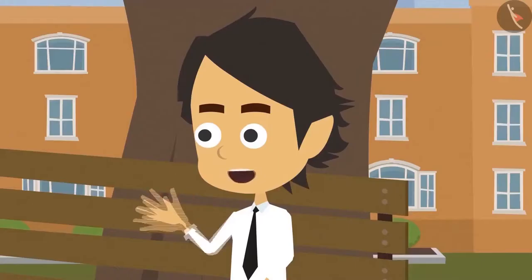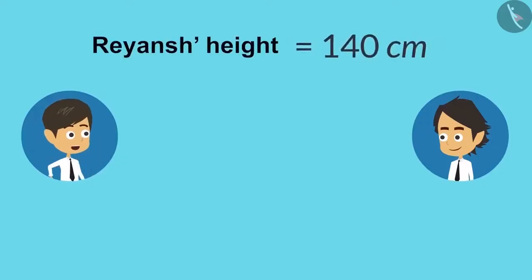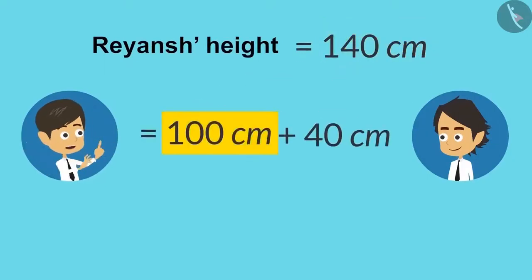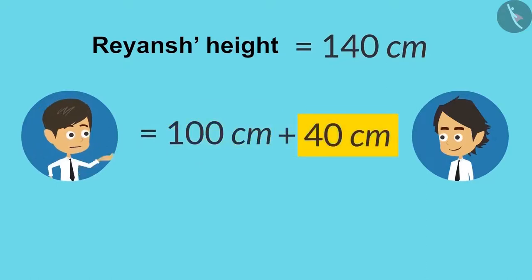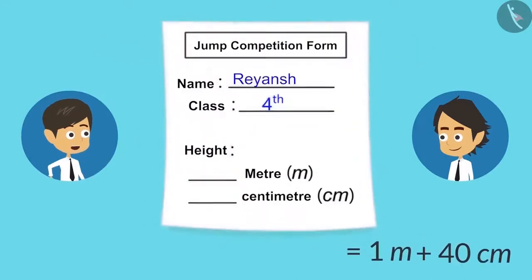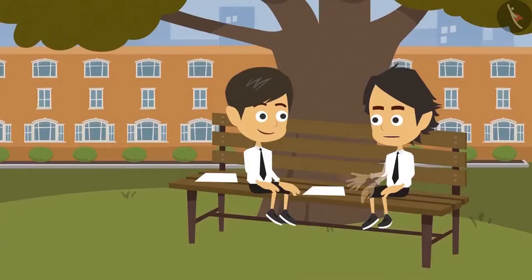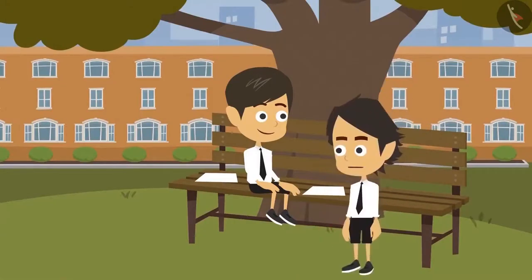Then what are you thinking? Come on, do it quickly. Look, my height is 140 centimeters. So I can write it as 100 centimeters plus 40 centimeters. Now I can write this 100 centimeters as 1 meter. Therefore, my height is 1 meter 40 centimeters. The form has been filled. Come, let's give it to the teacher. Let's go.